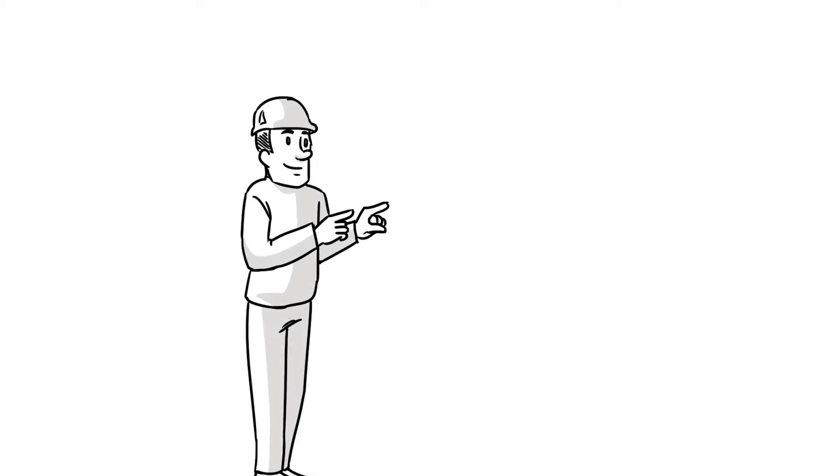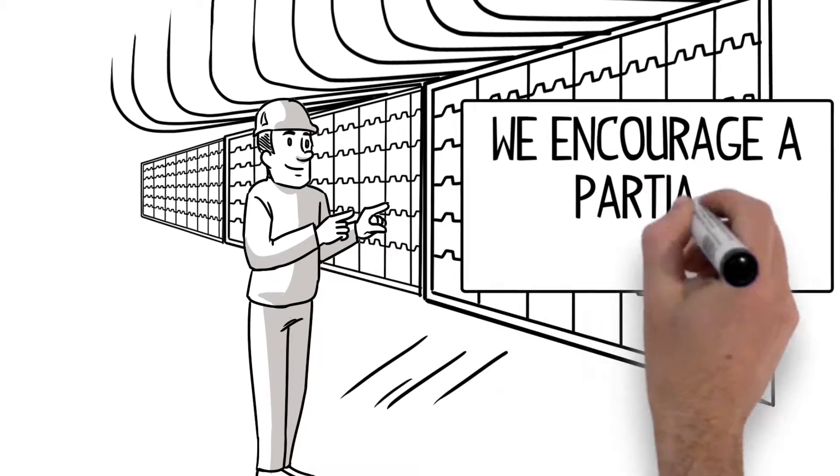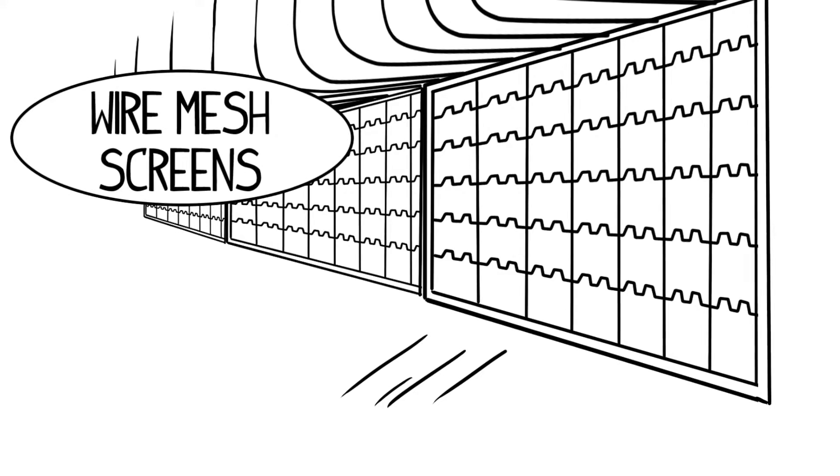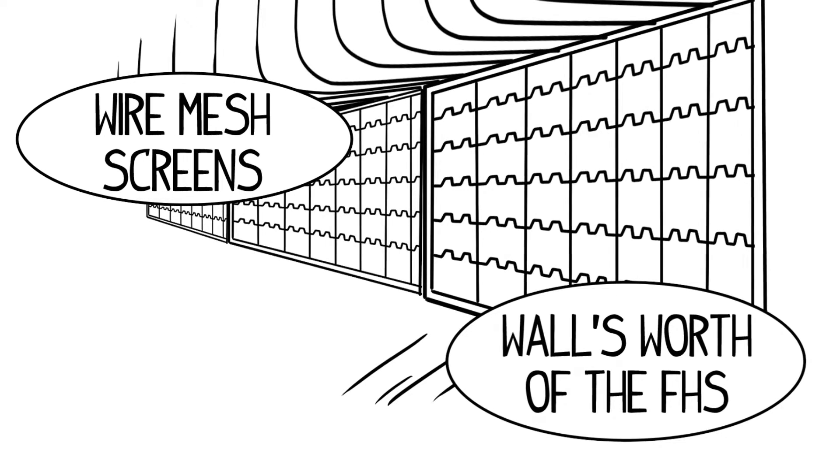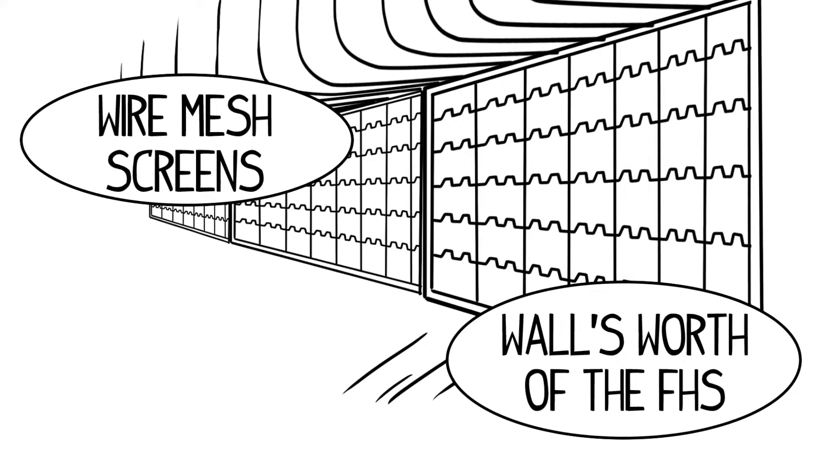If you don't have the budget to do a complete install during your next outage, we encourage a partial installation. We will make both the wire mesh screens for you, as well as a wall's worth of the FHS. Let them prove themselves to you. You can finish the rest of the hopper in your following outage.